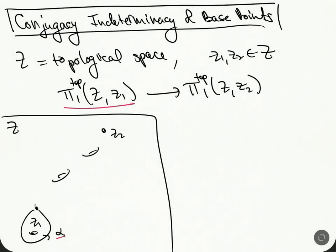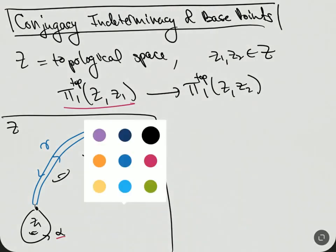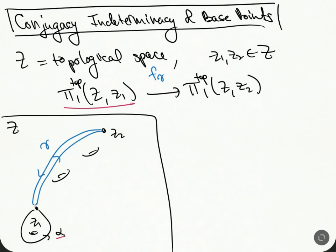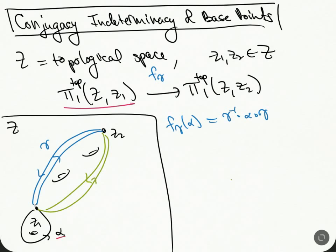So what we could do is take a path — we go along this way, go around the loop, then come back. If we call this path Gamma, then the map F(Gamma) takes Alpha and maps it to: go across with Gamma, then take Alpha, then undo it — i.e., Gamma composed with Alpha composed with Gamma inverse. We could do the same thing with a different path Gamma-tilde.